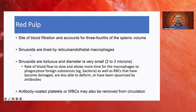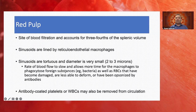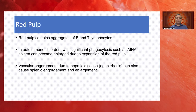The red pulp is the site of blood filtration, accounting for three-fourths of splenic volume. The sinusoids are lined by reticuloendothelial macrophages and are tortuous with very small diameters. The slow rate of blood flow allows more time for macrophages to phagocytose foreign substances such as bacteria and parasites, as well as damaged or antibody-opsonized RBCs. Antibody-coated platelets and WBCs are also removed this way. Red pulp contains aggregates of B and T lymphocytes. In autoimmune disorders like autoimmune hemolytic anemia, immune hyperplasia causes spleen enlargement, and vascular engorgement from cirrhosis and portal hypertension causes congestive splenic enlargement.